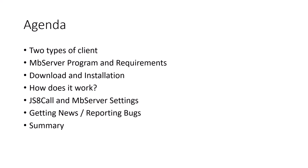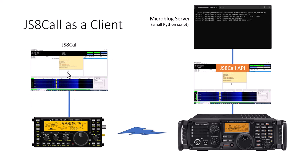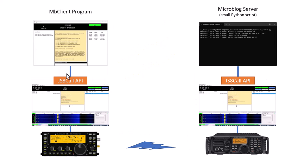Moving on to the clients - you can just use JS8Call on its own as a client. All you have to do is put the micro blog commands into the message box. The commands have to be in a specific format, and you send them off via JS8Call to the server, which then responds with the answer to the query or the post information.